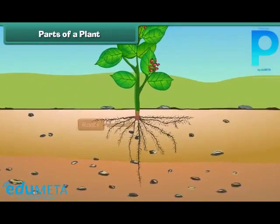Roots are the lower part of a plant. They grow in soil and help the plants to get water and minerals from the soil.